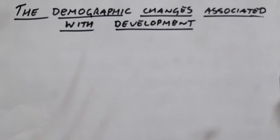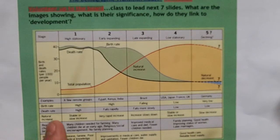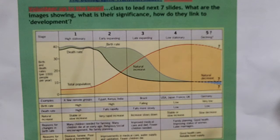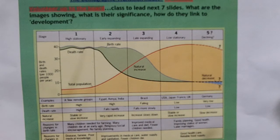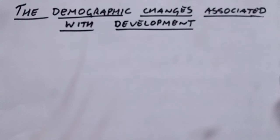Hopefully you've seen the demographic transition model video from AS level. The model looks a little something like this, with five clear stages showing how birth and death rate change as a country develops economically. We're going to look at a few of those demographic changes in a bit more detail — the way that a population changes as it grows economically.